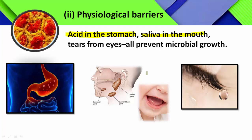Then one more physiological barrier is saliva in the mouth. Saliva is the secretion of salivary glands — multicellular glands represented by the parotid gland, sublingual gland, and submaxillary or submandibular gland. The secretion of these three glands is called saliva, and saliva functions as a physiological barrier. The third example is tears from the eyes, which also represent physiological barriers.